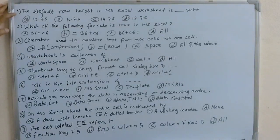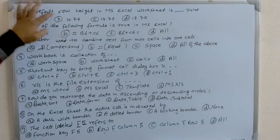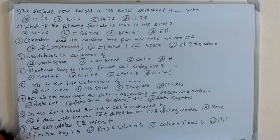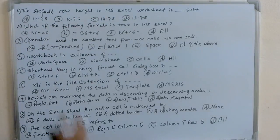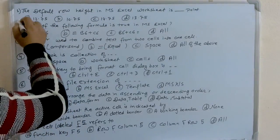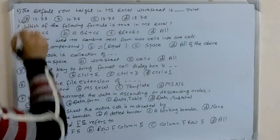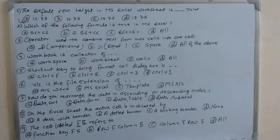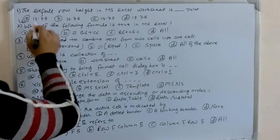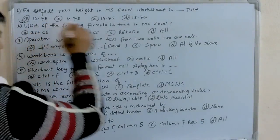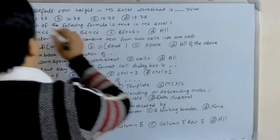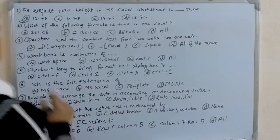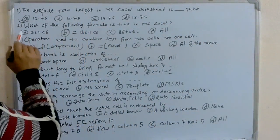Question number 1: The default row height in MS Excel worksheet is in point. The default row height in MS Excel worksheet is 12.75 points.